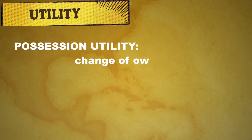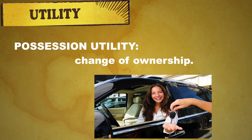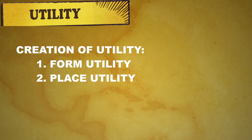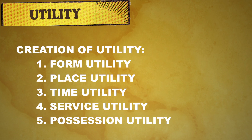The last one is position utility. Position utility is the change of ownership of the property. For example, a person who owns a car but is not able to drive can hire the car to somebody who can drive, and then utility is added to the object. This is an example of position utility. Under the creation of utility, we have form utility, place utility, time utility, service utility, and position utility.